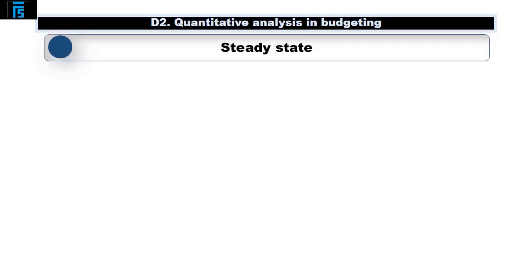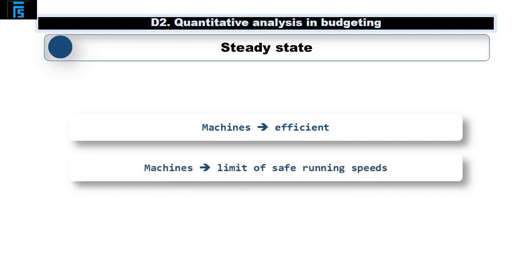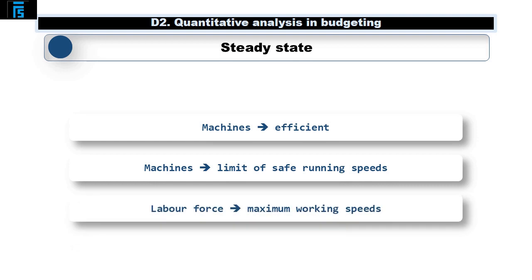The last area we need to look at is what happens once the learning curve effect has more or less disappeared, and we have reached something called the steady state. This happens when machines become efficient and restrict improvements, machines reach the limit of safe running speeds, or the labour force have reached maximum working speeds. This can be seen when the calculations we performed earlier show little or no change in the cumulative average time taken to produce a single unit or batch as the quantities continue to increase. Once the steady state has been reached, the average time taken to produce a single unit or batch can then be used for all future budgeting, costing and pricing purposes.